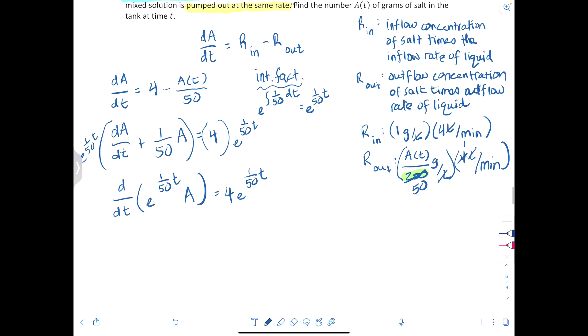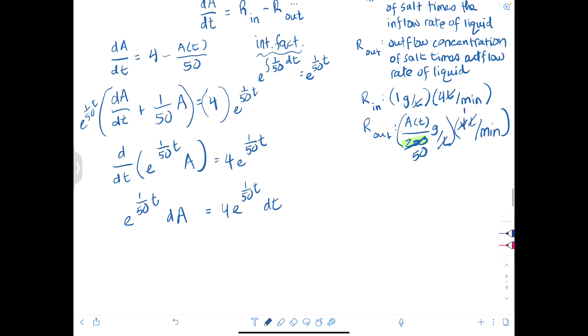And now getting it ready to integrate and separating them, we'll have - sorry about the dogs - e to the t/50 dA is equal to 4e to the t/50 dt. Now I need a factor of 1/50 because if I said u equals t/50, du would be 1/50 dt. So if I multiply times 1/50, I have to balance it out by multiplying times 50.